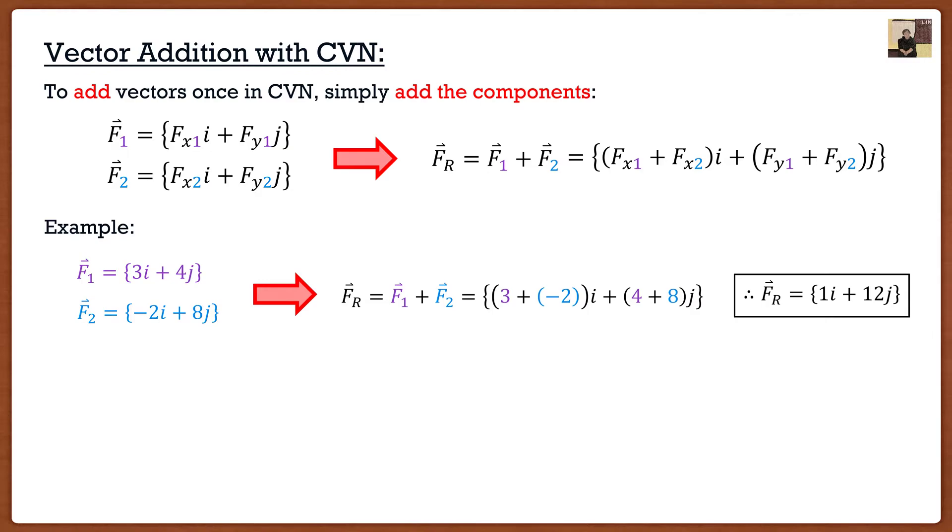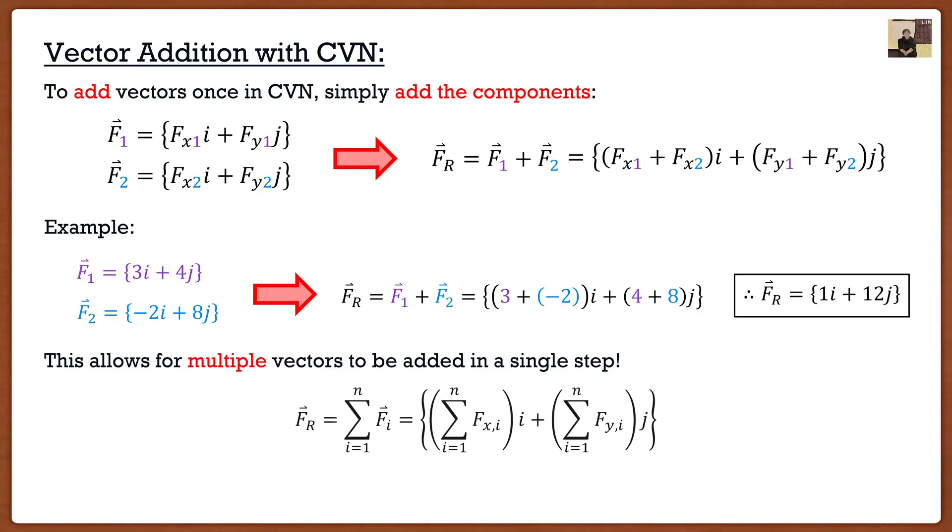We have our resultant vector. More importantly this allows us to add multiple vectors in a single step. If I had an f3 and f4, all I have to do is add those components into my addition. This allows me to create this nice formula where I can add an infinite amount of vectors simply just by adding their components.